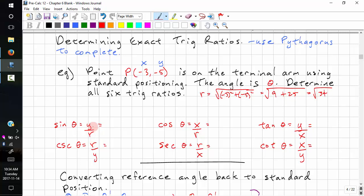This is square root 9 plus 25. This is square root 34. Now we just need to substitute negative 5 over root 34.